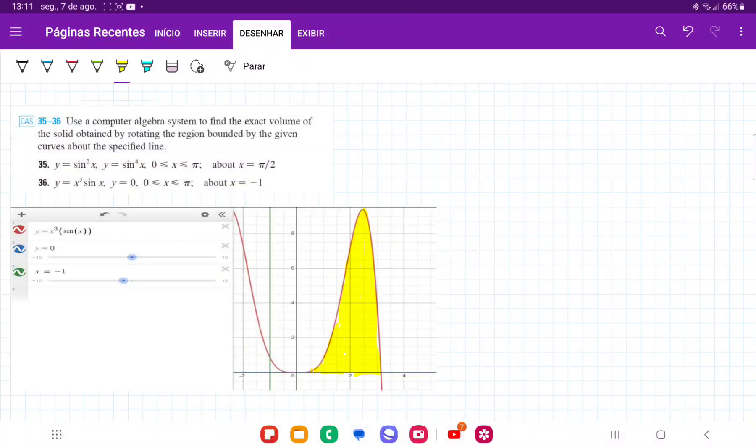So for number 36, we are taking the area bounded between these two curves, which I have shaded in yellow, and we're rotating about the line x is equal to negative 1, so about this line right here.